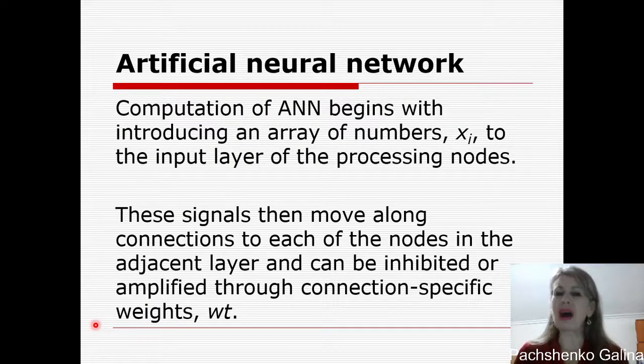Computation of Artificial Neural Network begins with introducing an array of numbers Xi to the input layer of the processing nodes. These signals then move along connections to each of the nodes in the adjacent layer and can be inhibited or amplified through connection-specific weights.